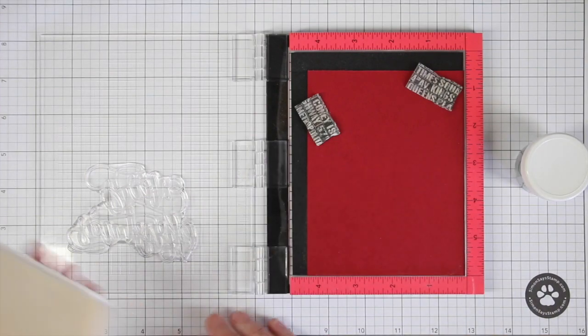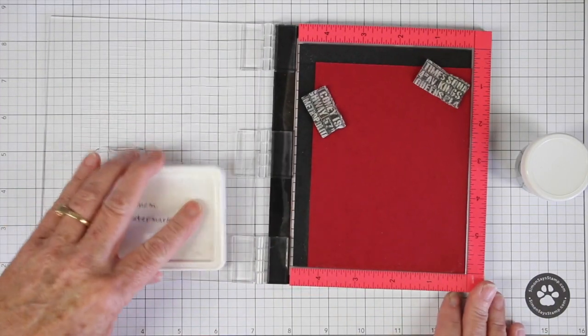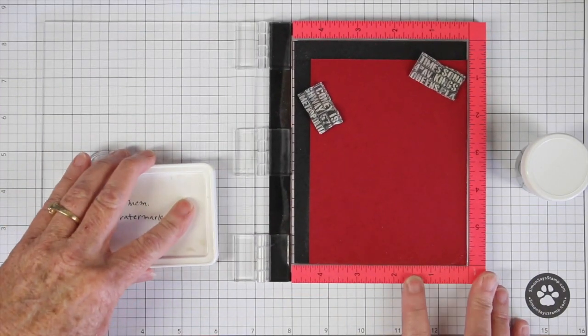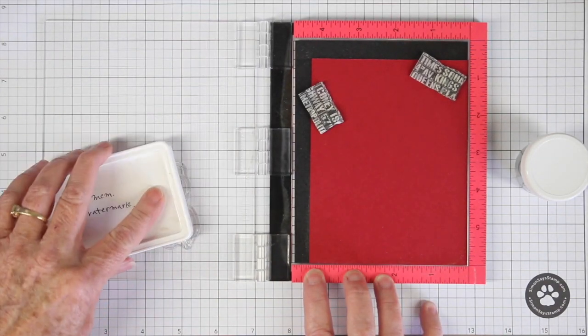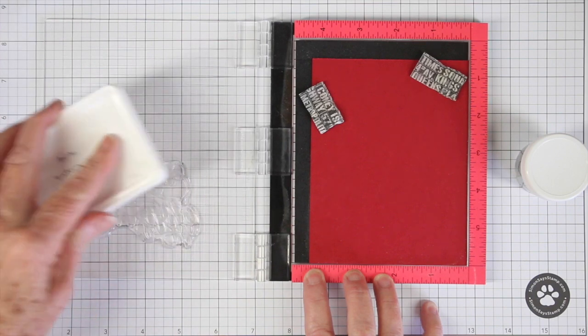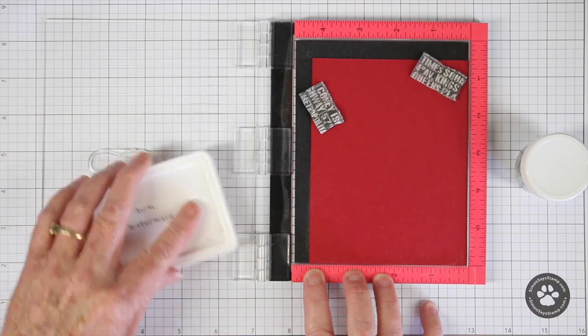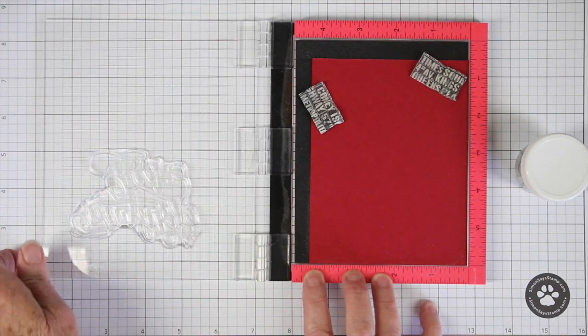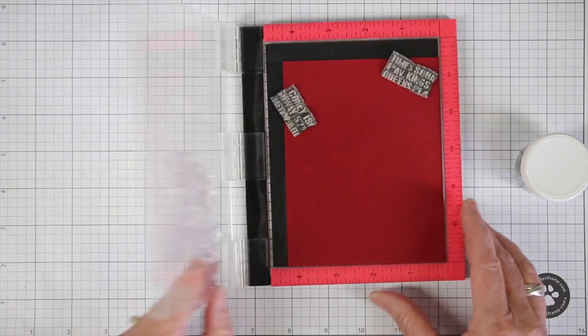Once I have that done, I'm going to use my clear ink and ink up my stamp. While I'm doing that, I wanted to let you know you can use any pigment ink. Pigment ink will hold onto the powder so you can do your heat embossing. I happen to like the clear ink along with colored embossing powders.